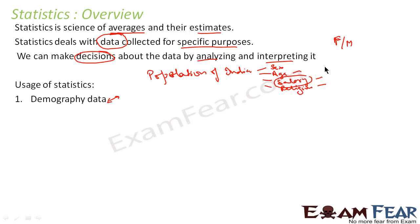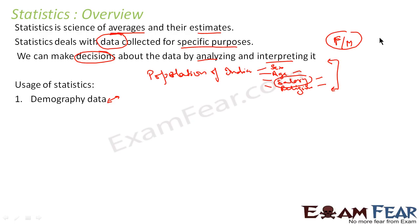Statistics is about science of average and estimates — it deals with data. Based on the data we do averages, we estimate, and we come to our conclusions. We analyze and interpret the data and come to decisions — for example, the sex ratio is this value, the unemployment ratio is this much, and so on.